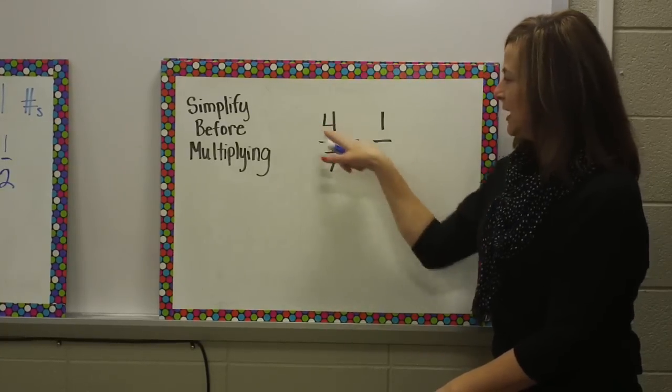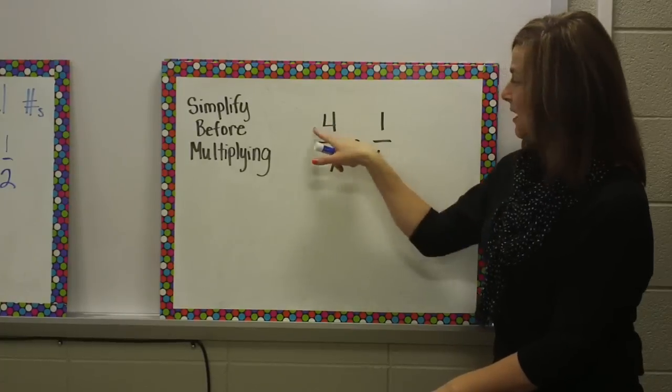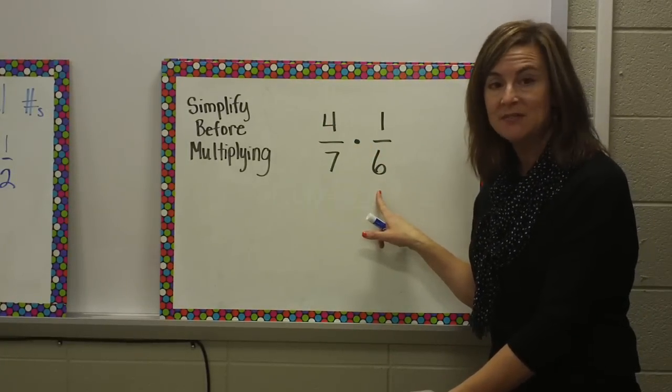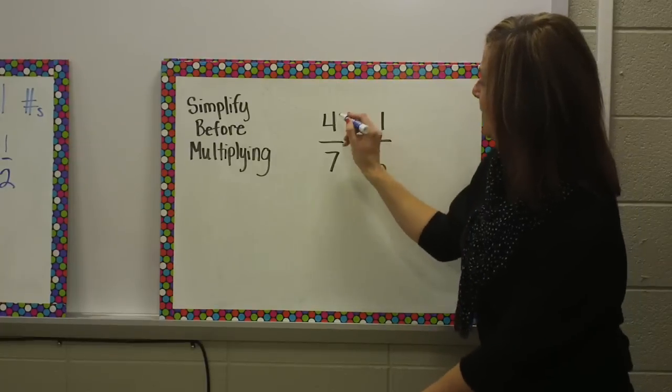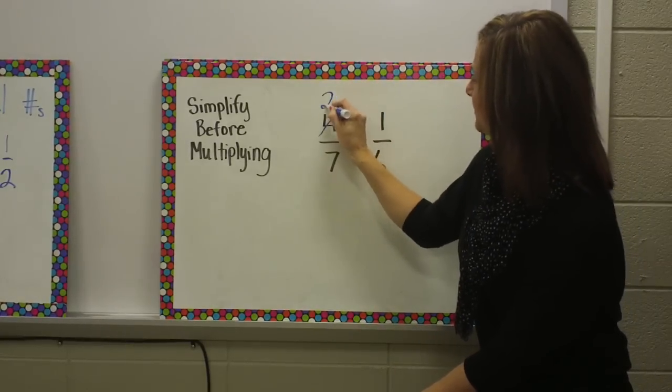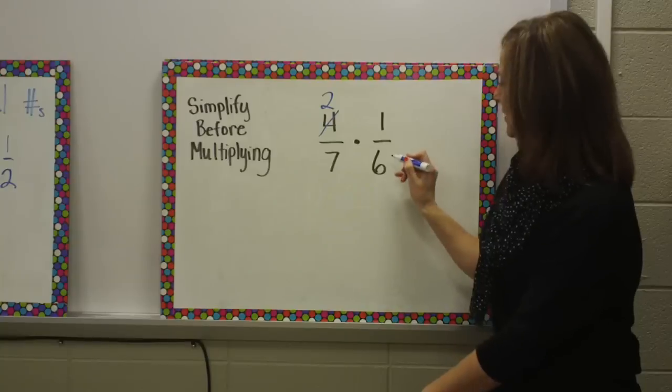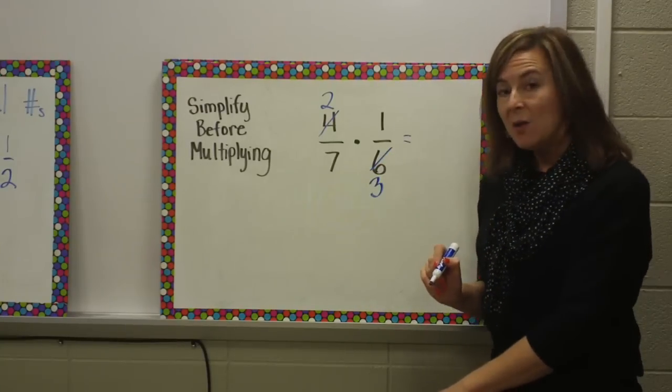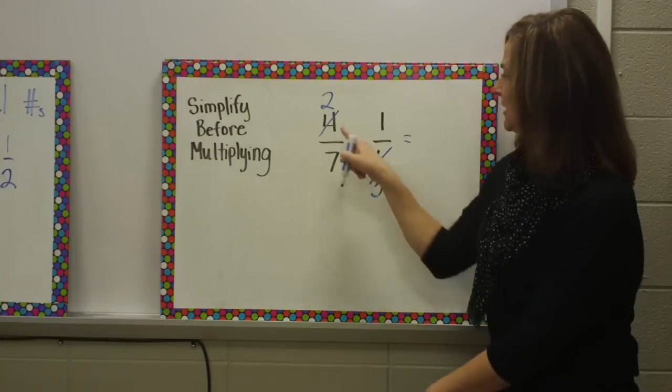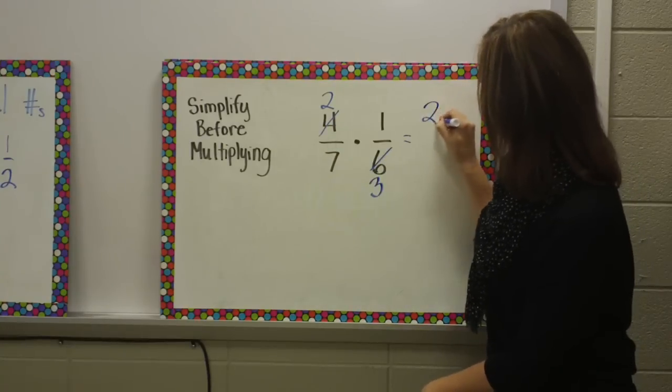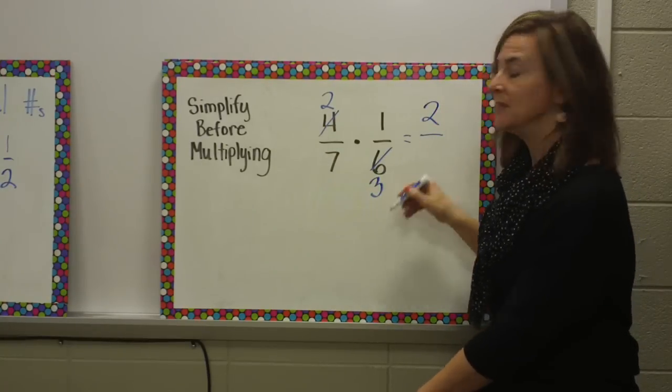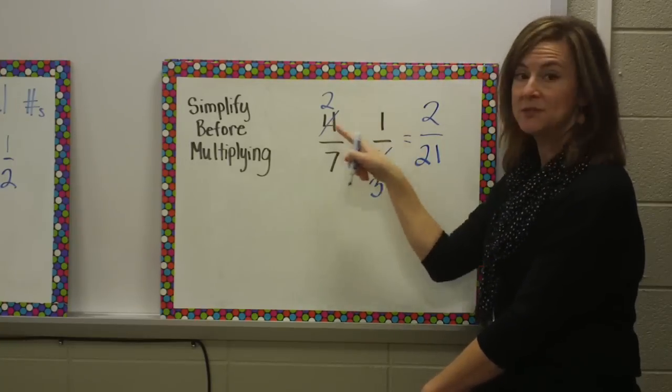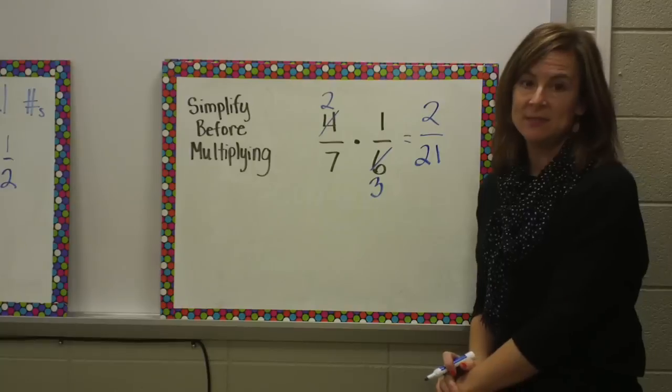We start by looking at the cross-products here. So we have four and six. Both four and six are even, so I can divide those by two. Four divided by two is two. Six divided by two is three. Now, when I multiply the numerators and the denominators, two times one is two. Seven times three is twenty-one. I was able to simplify first, and this ends up in simplest form.